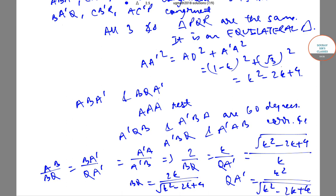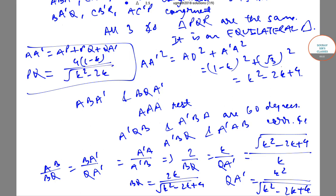Now using AA' = AP + PQ + QA', we get PQ = 4(1-k)/√(k²-2k+4).